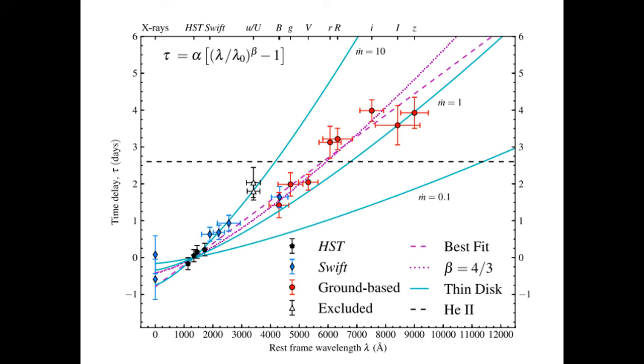The trend is also nearly monotonic, with two noticeable exceptions. First is the flattening of the lags at long wavelengths near 4 days. Second are the large time delays of the SDSS-U and Swift-U bands. This may be due to broad-line region emission picked up in these filters, which has a longer lag and may bias the estimate of the continuum lag at these wavelengths.